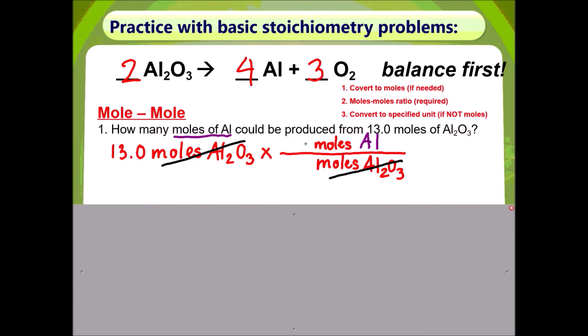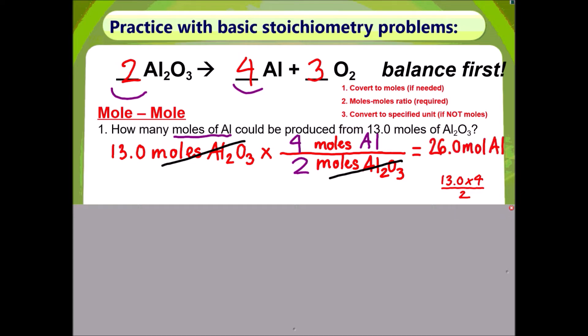I have left blank space here so I can put in the corresponding number, which comes from the coefficient. In front of moles of aluminum oxide I'm going to have 2, and in front of moles of aluminum I'm going to put 4, according to the balanced equation. Since my units worked out, all I have to do is multiply across the top and divide by the bottom. The answer is 26.0 moles of aluminum.